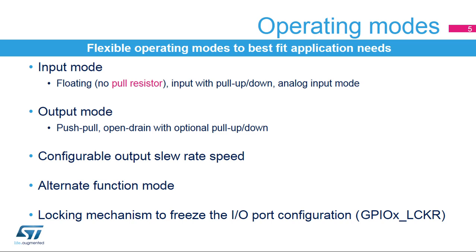I/O pins are also used by other embedded peripherals to interface with the external environment. Alternate function registers are used to select the configuration for the peripherals in this case. The configuration of the I/O ports can be locked to increase robustness of the application. Once the configuration is locked by applying the correct write sequence to the lock register, the I/O pin's configuration cannot be modified until the next reset.